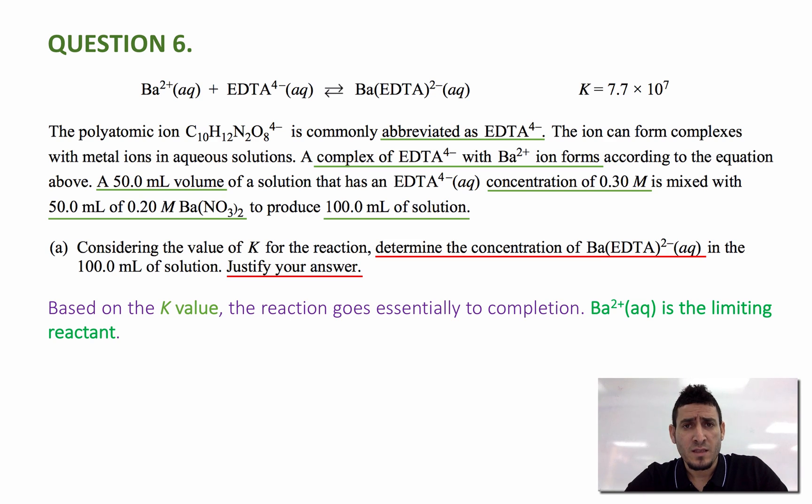Now why Ba 2+ is the limiting reactant? Because the Ba 2+ and EDTA 4- react in a ratio of 1 to 1. Now looking at the volume and concentration of EDTA 4- and volume and the concentration of barium nitrate, we can see that the resulting numbers of mole will be smaller for barium nitrate. So that's why barium is going to be the limiting reactant.